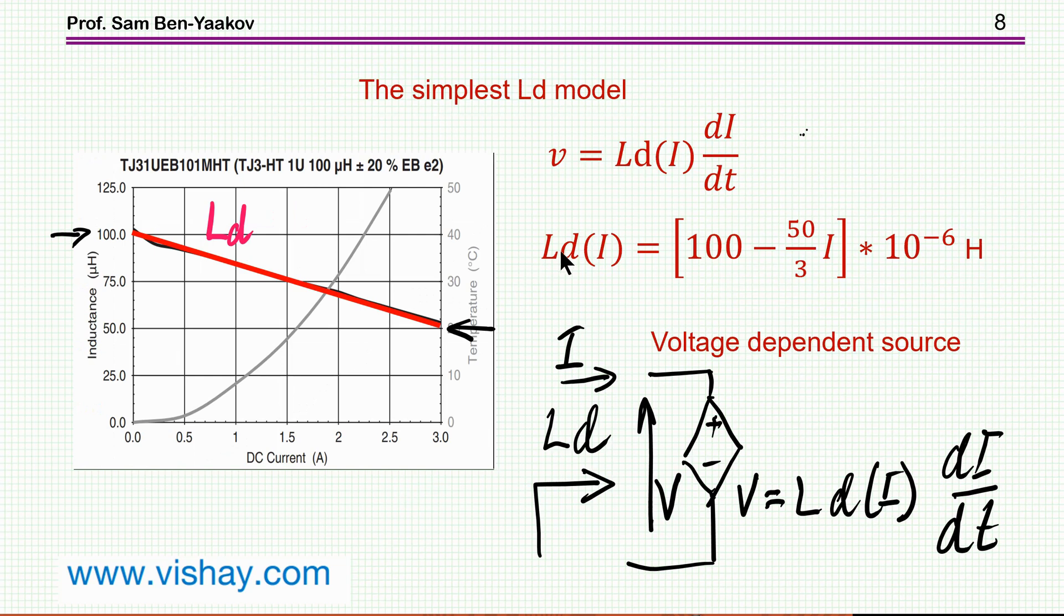This inductance is the local inductance at the given DC current. This means that I can now write the state equation for the inductor locally as V is equal to the local inductance, which is a function of the current times dI/dt, which is the classical state equation for the inductor.